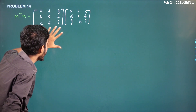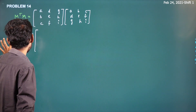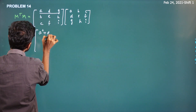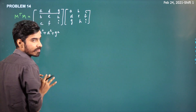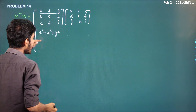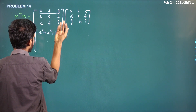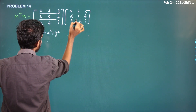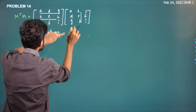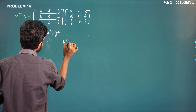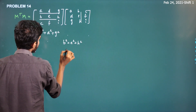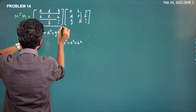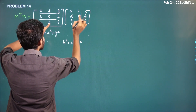If you go to M transpose M and look at the diagonal elements, you only need to find the diagonal elements of M transpose into M. What I find is: the first diagonal element is A² + D² + G², the second is B² + E² + H², and the third is C² + F² + I².